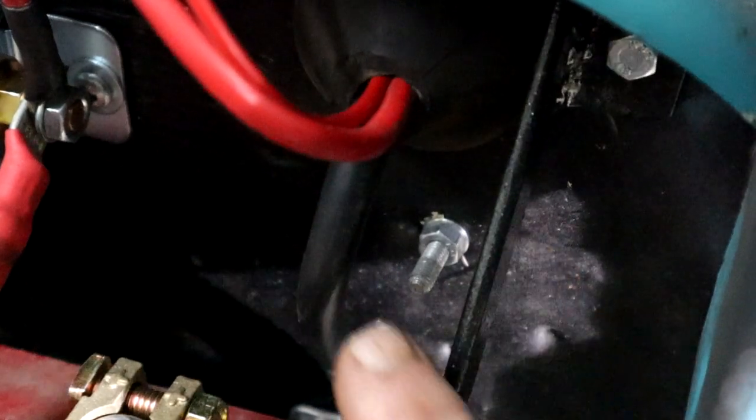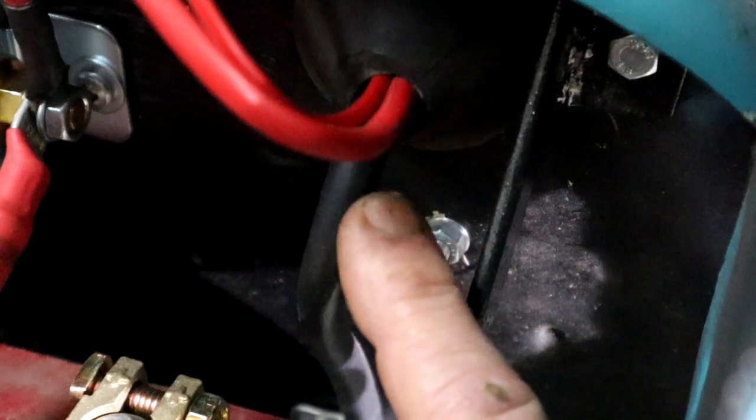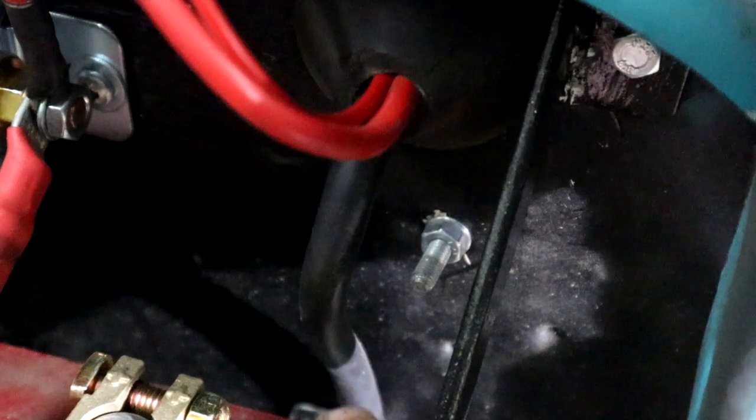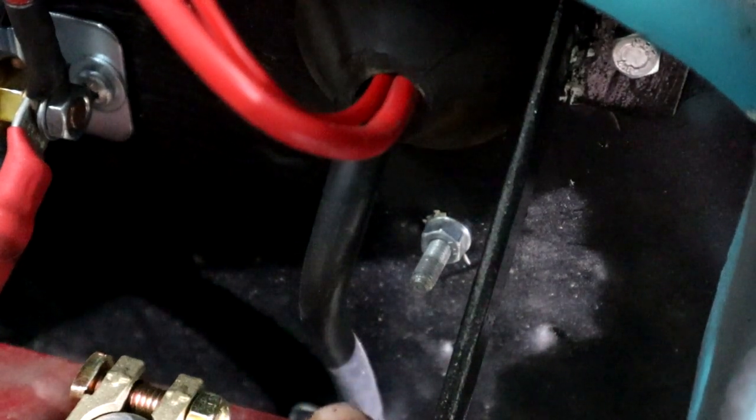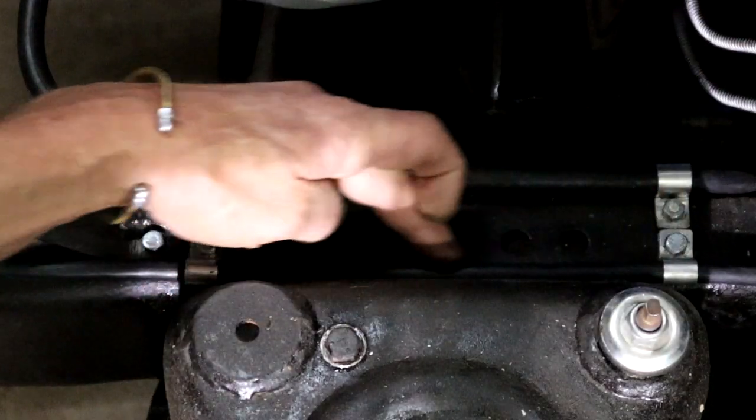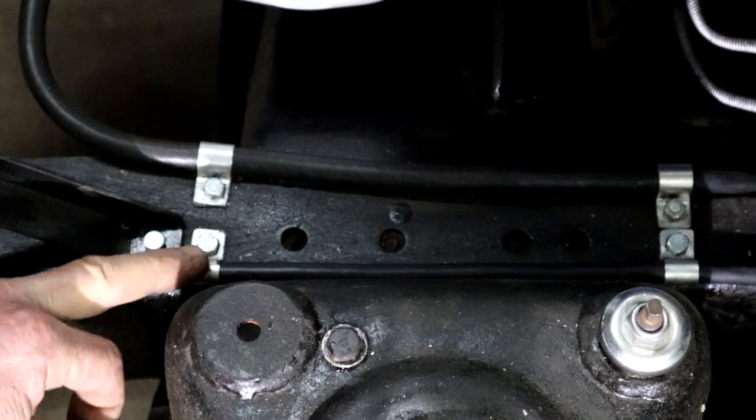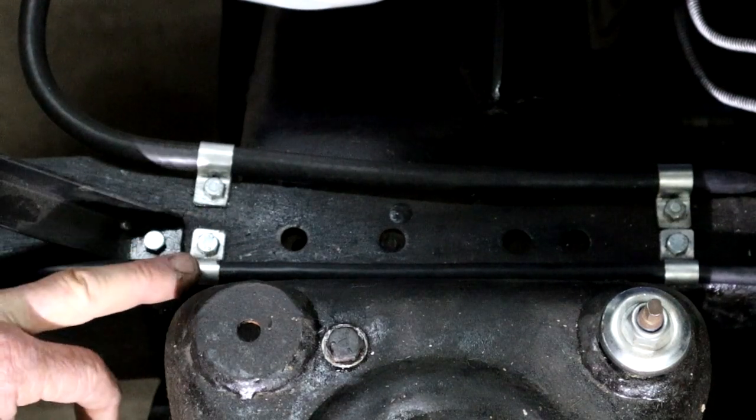Right here you can see my seven core cable coming through the firewall through this rubber grommet, leading on towards the front. Let me show you.